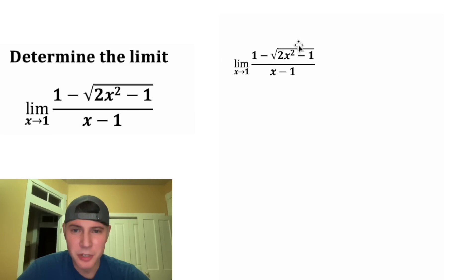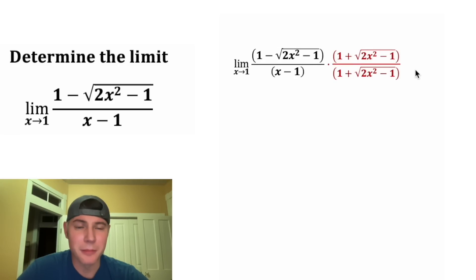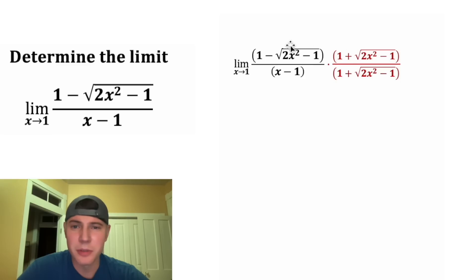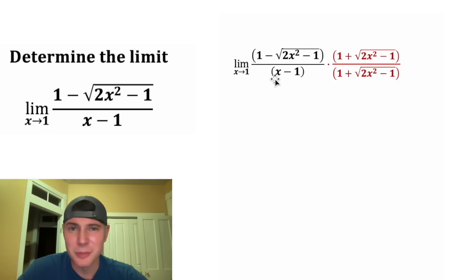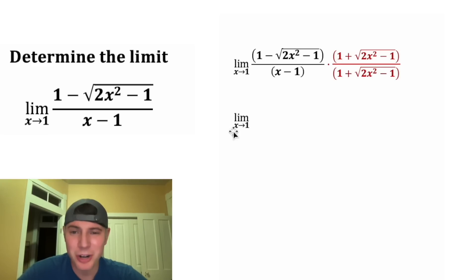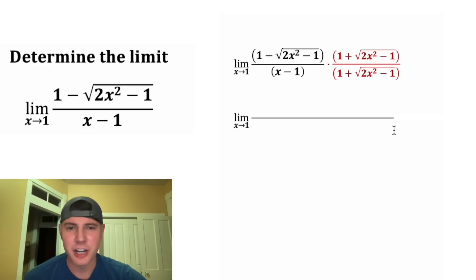Anytime you see a binomial including a radical expression, you're going to multiply the top and bottom by the conjugate. For the conjugate, you leave the first and second terms alone but change the minus to a plus (or vice versa). Whatever you do to the top, you have to do to the bottom. Always copy down the limit as x approaches 1 — teachers will mark you wrong if you don't.